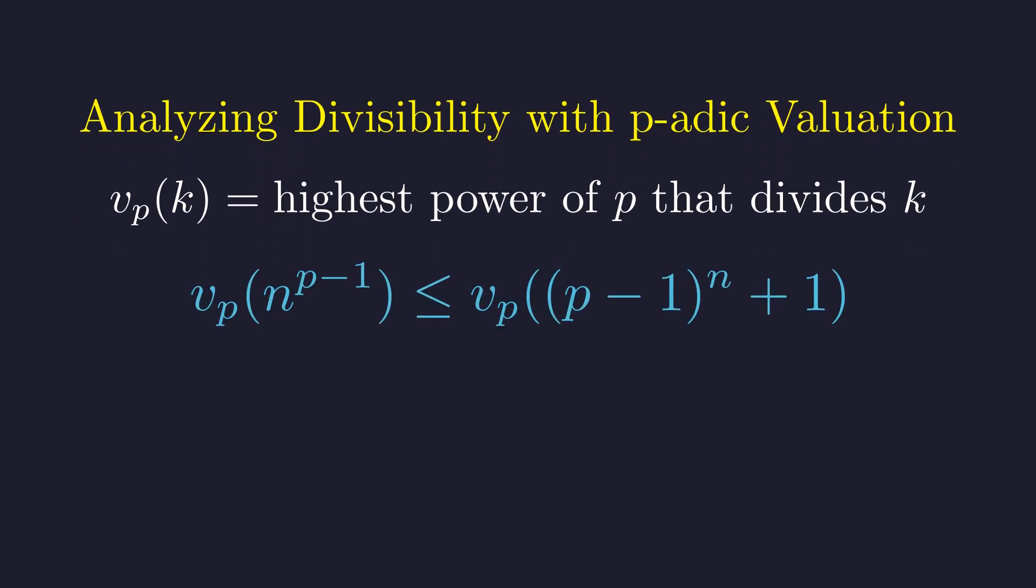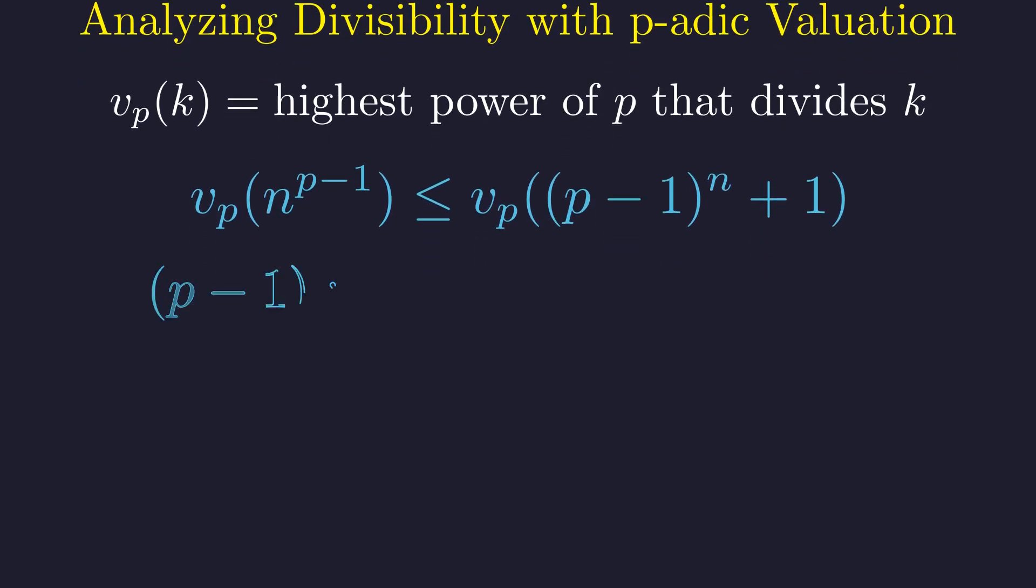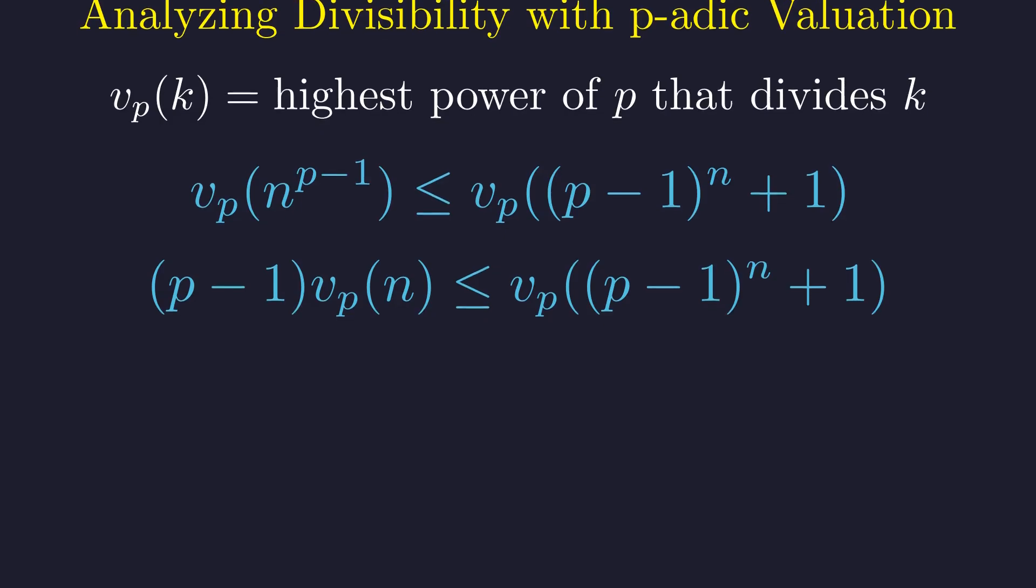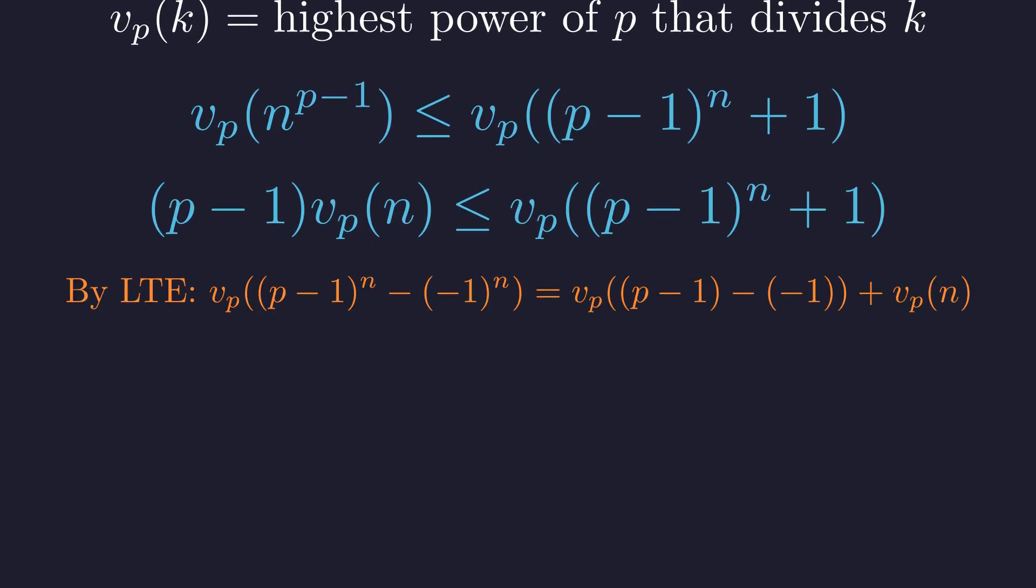In terms of valuation, this is written as v_p(n^(p-1)) ≤ v_p((p-1)^n + 1). Using a property of valuations, we can bring the exponent down, simplifying the left side. To analyze the right side, we will apply the lifting the exponent lemma. Since n is odd, +1 is equivalent to minus (-1)^n. We can apply the lifting the exponent lemma because p is an odd prime, p divides the base difference p-1 minus negative 1, which is p, and the exponent n is odd.